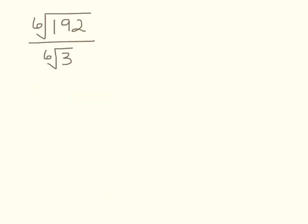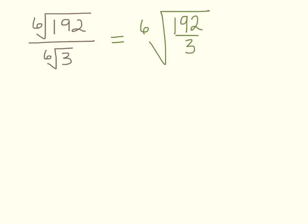Next: the sixth root of 192 over the sixth root of 3. Since the sixth root of 192 and the sixth root of 3 individually aren't clean, combine them as the sixth root of 192 divided by 3. That's the sixth root of 64, and since we have our powers memorized, the sixth root of 64 is 2.